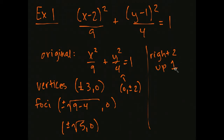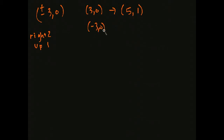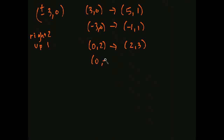Now let's shift those things right 2 and up 1. The major axis vertices: (3, 0) shifts to (5, 1), and (−3, 0) shifts to (−1, 1). The minor axis vertices: (0, 2) shifts to (2, 3), and (0, −2) shifts to (2, −1).